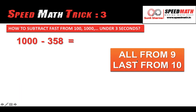The rule we are going to use to subtract is very simple: all from 9 and last from 10. Whatever number we are supposed to subtract from thousand, we subtract each digit — all from 9 but the last one from 10. So: 9 minus 3 is 6, 9 minus 5 is 4, 10 minus 8 is 2. The answer is 642. So easy!